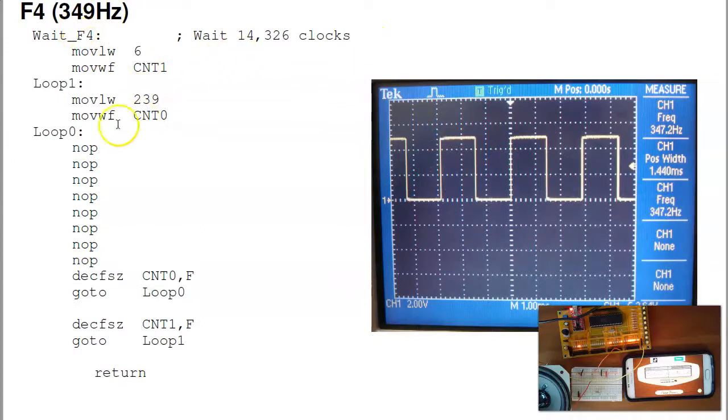For 14,000 clocks, I'll modify the code so that the inner loop makes 11 clocks, times 239, times 6, plus 5 clocks, times 6, plus 4 clocks. Should give you 14,326. Throw it on the oscilloscope, I can see it's actually 347.2 hertz, 14,400 clocks between calls.